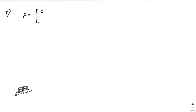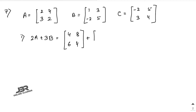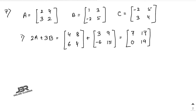Sum number 7: A is [2, 4, 3, 2], B is [1, 3, -2, 5], and C is [-2, 5, 3, 4]. Number 1: find 2A + 3B. Multiply 2 with A: [4, 8, 6, 4]. Multiply 3 with B: [3, 9, -6, 15]. Add: 4+3=7, 8+9=17, 6+(-6)=0, 4+15=19.